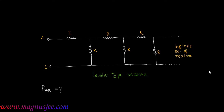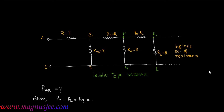Infinite number of resistances are connected to the right ends of this ladder type network. We can denote the different terminals as C and D, F and G, then K and L. The resistances are denoted as R1 = R2 = R, R3 = R, R4 = R, R5 = R, and R6 = R, and remaining resistances continue to the right. Given R1 = R2 = R3 = ... up to infinite times, all equal to R.